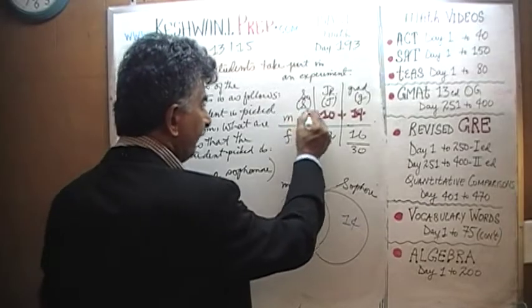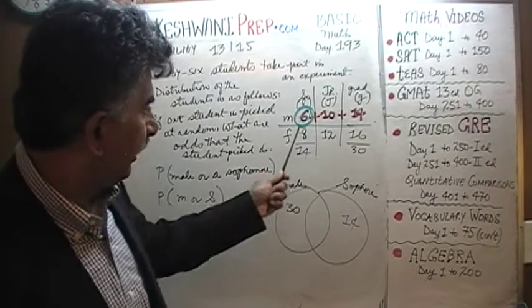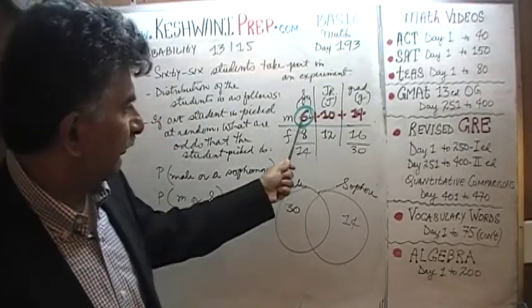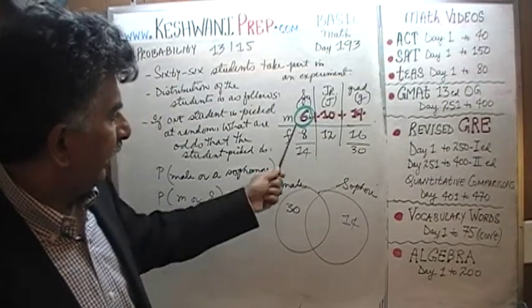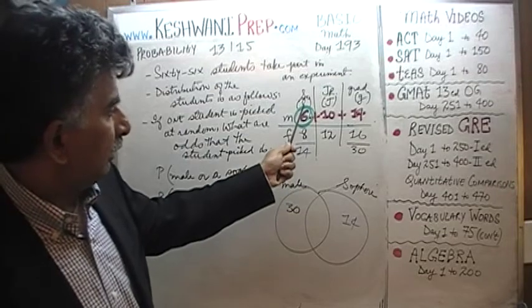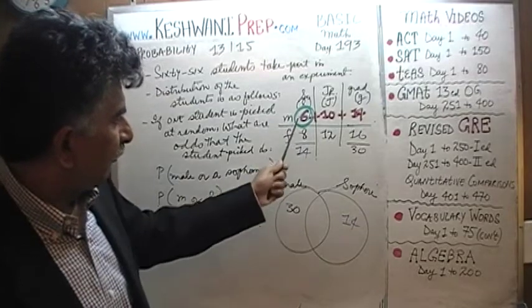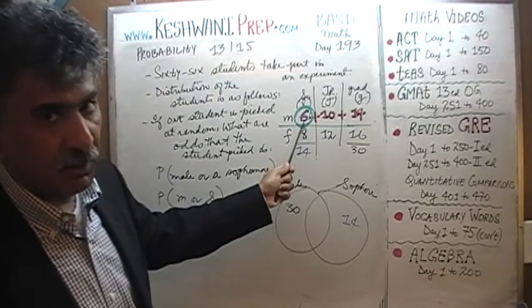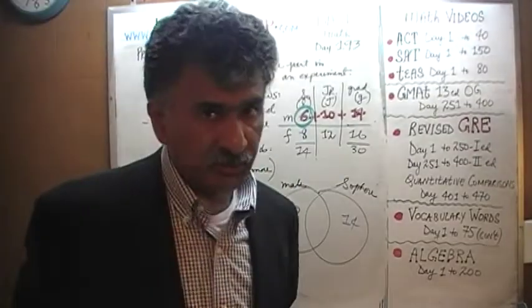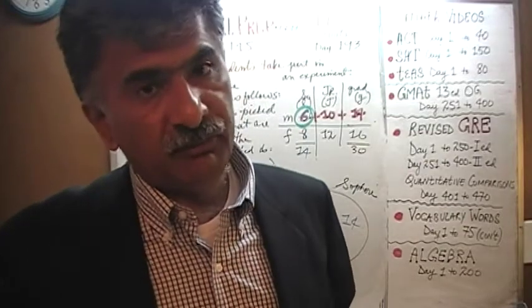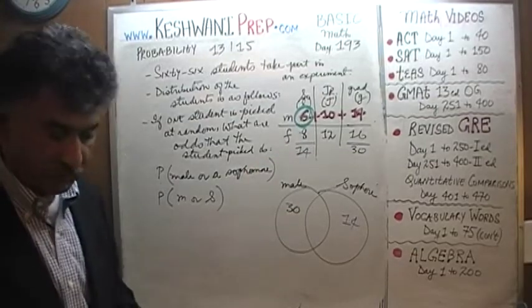There are 6 people who happen to be male — counted in the 30 when we count 6 plus 10 plus 14 — and those same 6 people are also counted as sophomores. Those 6 people possess both characteristics. They are counted twice. That is the common element.